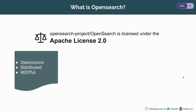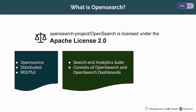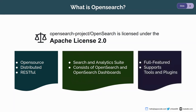OpenSearch is a suite of tools centered on a search engine, also called OpenSearch. It consists of a visualization and user interface called OpenSearch dashboards. It is 100% open source software released under the Apache License version 2.0. With OpenSearch, one can easily ingest, secure, search, aggregate, view and analyze data. Common use cases include application search, log analytics, and more. OpenSearch is full-featured with support for tons of plugins and tools that add production-grade features.